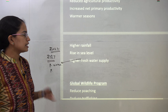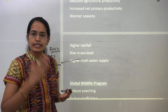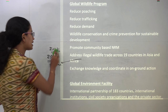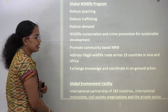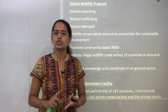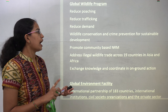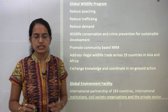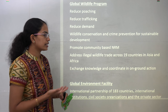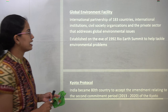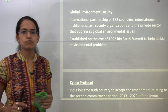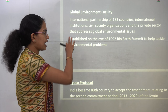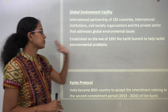Climate change is also said to produce heavier rainfall, increase sea levels, and increase fresh water supply. Some important programs recently released: the first is the Global Wildlife Program, which has three major objectives — reducing poaching, reducing trafficking, and reducing demand for wild animals. Wildlife conservation and sustainable development with crime prevention is the basic idea, aiming to impart knowledge and coordinate on-ground action plans. The next is GEF, the Global Environmental Facility — very important. 183 nations are part of it, working around global environmental issues, established as a result of the Earth Summit.